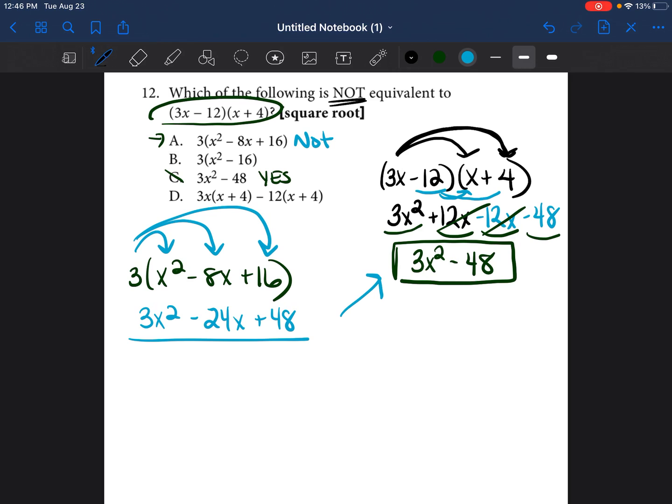But let's go ahead and do the rest. Let's see if B is equivalent. So we're going to do 3 times x squared minus 16. We're going to go ahead and distribute that 3. 3 times x squared is 3x squared. 3 times negative 16 is negative 48. That's the same as this. So B is equivalent.